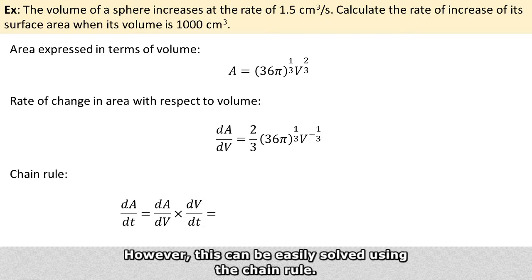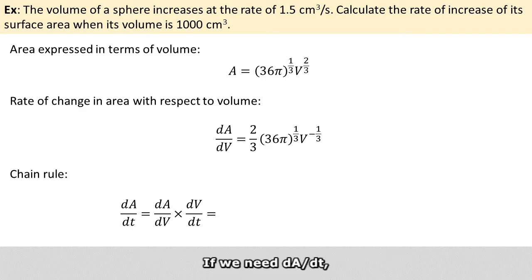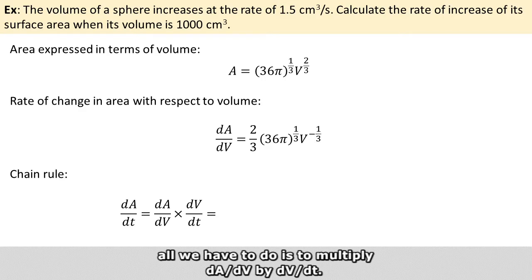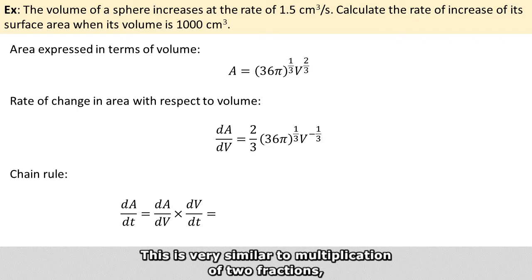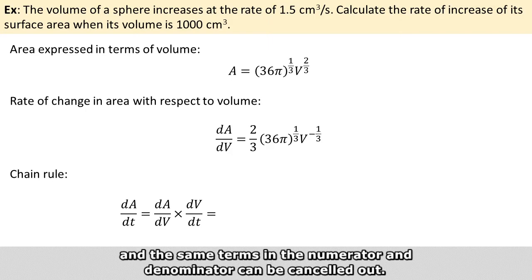However, this can be easily solved using the chain rule. If we need dA/dT, all we have to do is multiply dA/dV by dV/dT. This is very similar to multiplication of two fractions, where the same terms in the numerator and denominator cancel out.